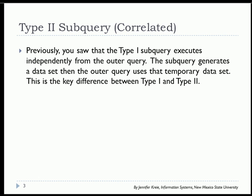In a previous video, you saw that the type 1 subquery executes independently from the outer query. That means the subquery runs, generates a dataset, and the outer query uses that temporary dataset. This is a key difference between the type 1 and type 2 subqueries.